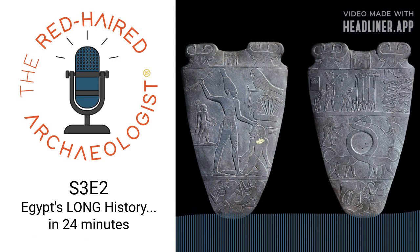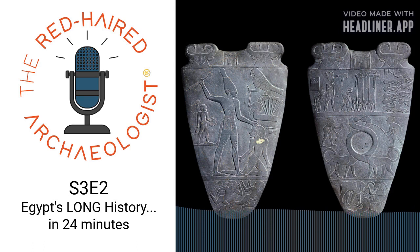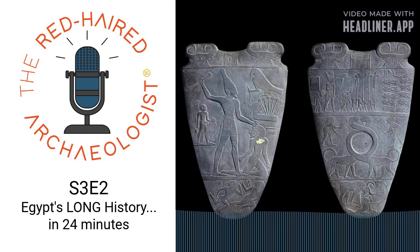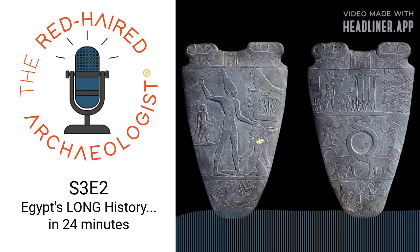Around 3400 BCE, the north was called the Redland, and even though it's higher up on a map, that area became known as Lower Egypt. The south was called the Whiteland and Upper Egypt. This is something I still have to pause and think about, because to me that's flipped — if something is in the north, I think of it as up. Most of us think about up and down based on what a map looks like and cardinal directions.